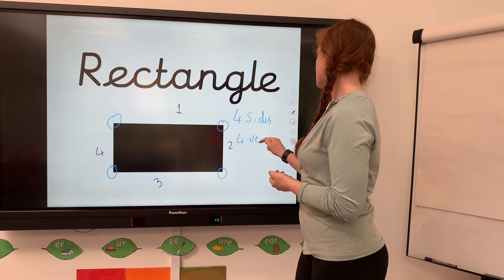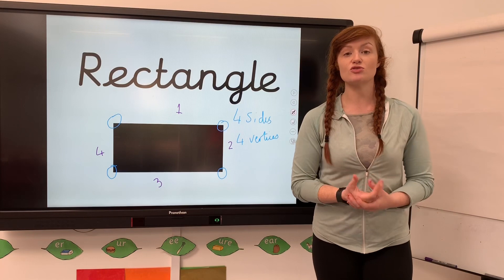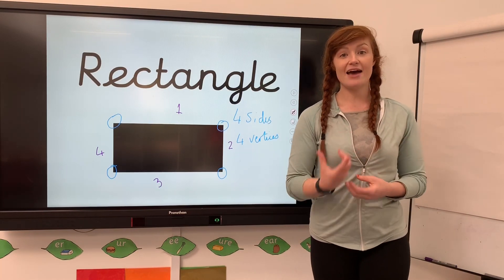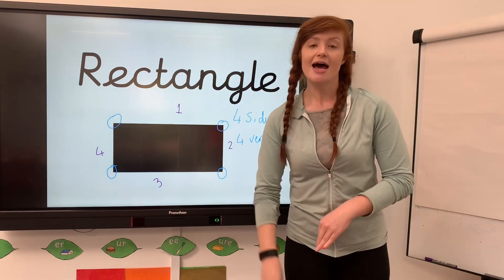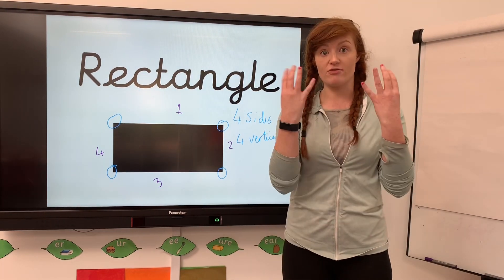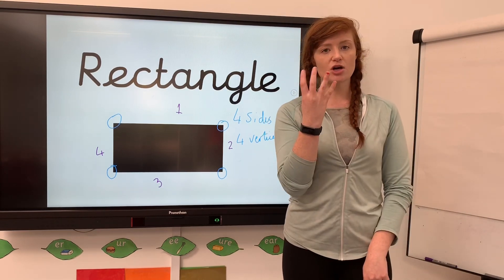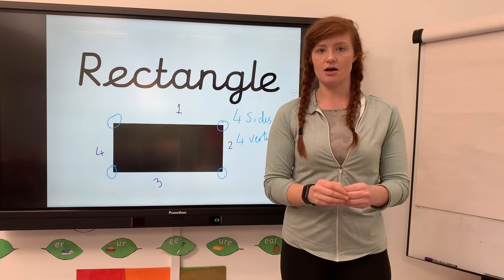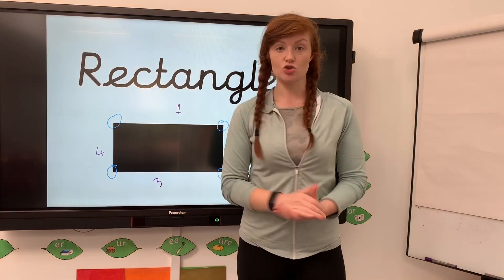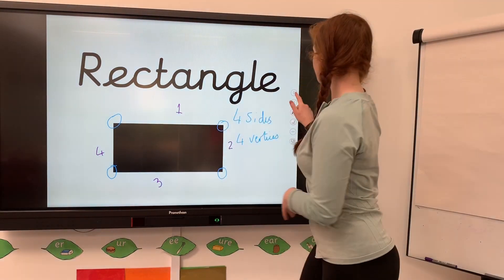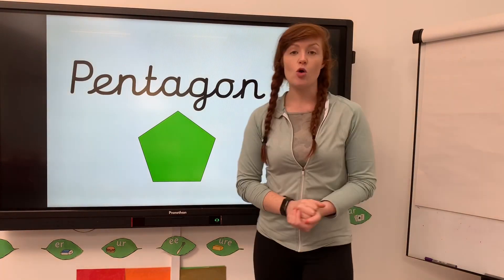Now the reason why a lot of children get mixed up between a rectangle and a square is because they have the same properties - the same number of sides and the same number of vertices. However, on a square all four sides are equal, meaning the same size, whereas on a rectangle there are two sides that are long and two sides that are short - so they're not equal. That's where the difference comes in.